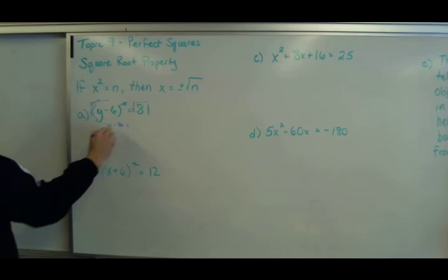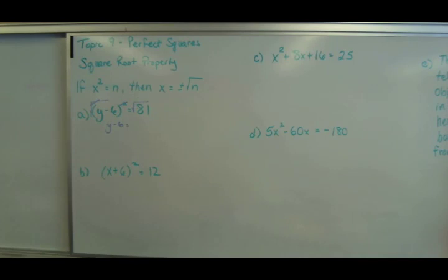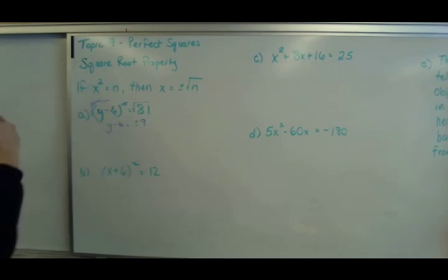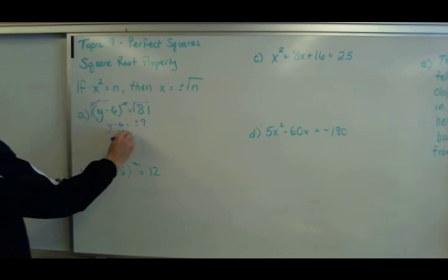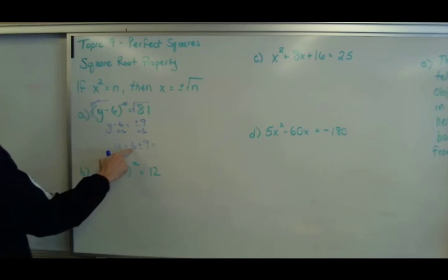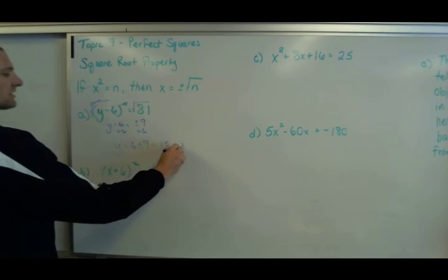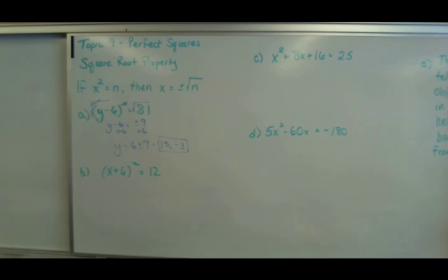When you take a square root, the square and the square root cancel and you're left with y - 6. Now on this side you're finding the square root of 81, which is 9. It says it's plus or minus, so you have to take into account the positive and negative values of 9. Then you solve this like normal, adding 6 to both sides, and you get 6 ± 9, which is 15 and -3. And those would be your two solutions. In these problems you do need two solutions.